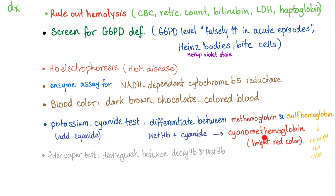There's a test called the potassium cyanide test. We add cyanide to differentiate between methemoglobin and sulfhemoglobin. Methemoglobin plus cyanide gives cyanomethemoglobin, which has a bright red color. Sulfhemoglobin doesn't turn bright red when you add cyanide — in fact, sulfhemoglobin sometimes looks green before adding cyanide.